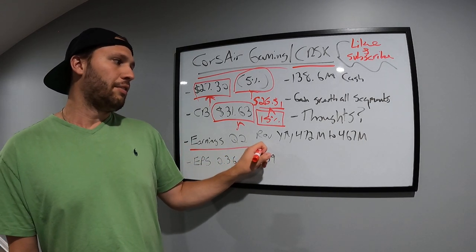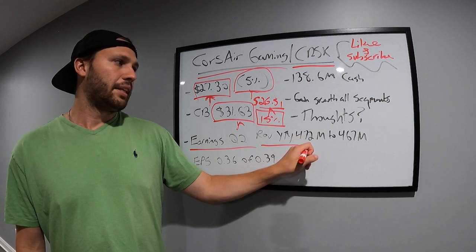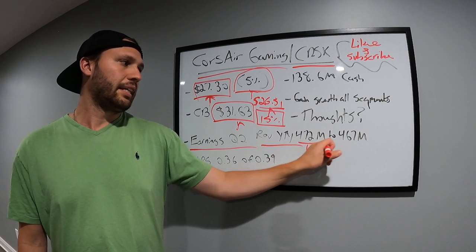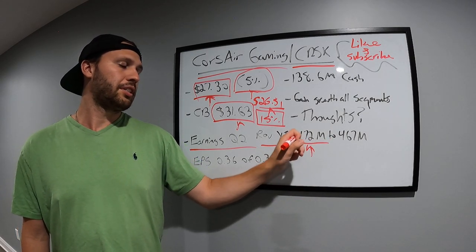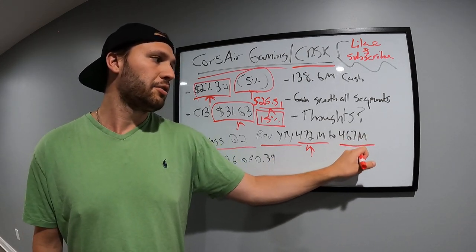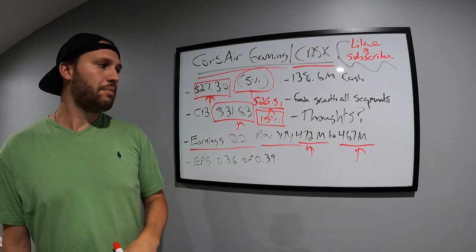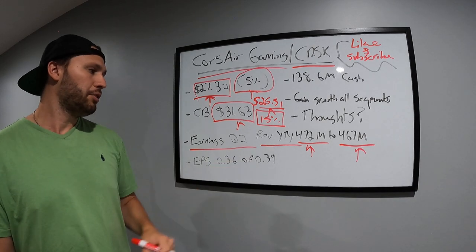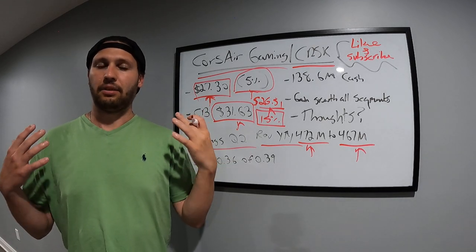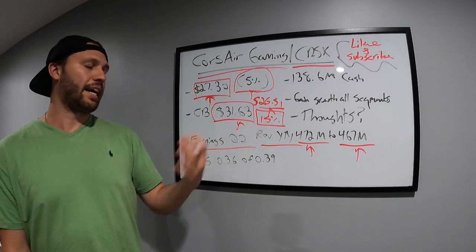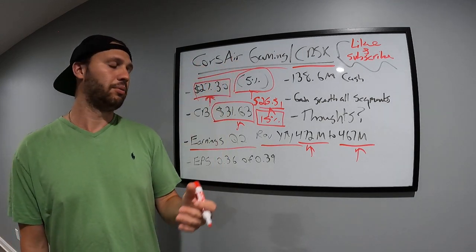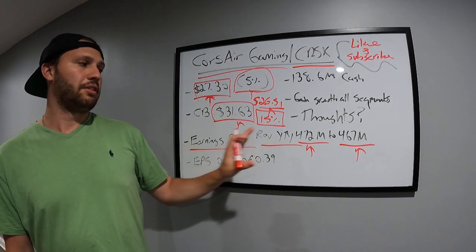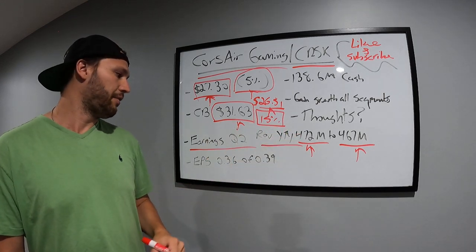Q2 earnings. Revenue year to year, they did beat. Year to year, they had $472 million. Analysts predicted $467 million. So they did beat there in revenue, which is awesome. That means people are just spending money on this brand. They own multiple brands too. But yeah, this company's exceeded revenue.